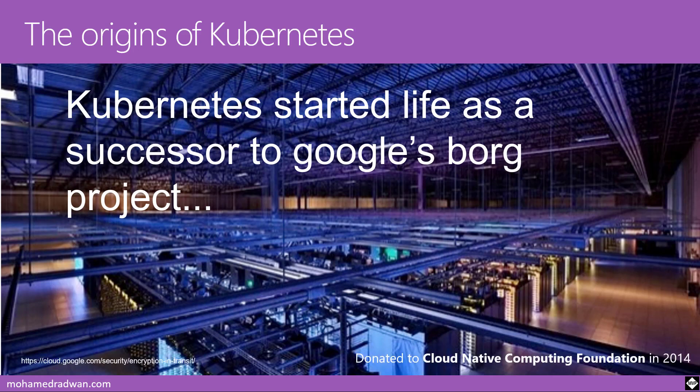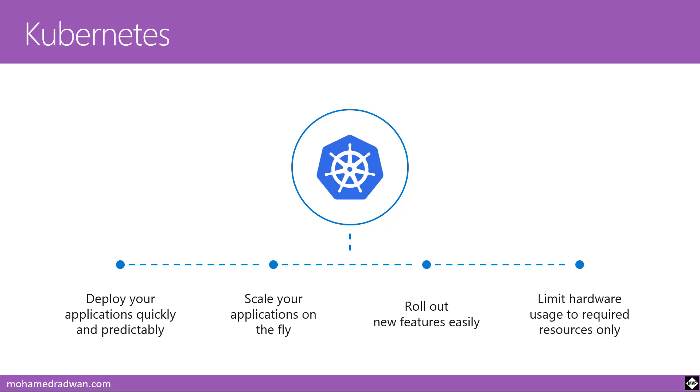The origins of Kubernetes: it came to life as a successor to Google's Borg project and was donated to the Cloud Native Computing Foundation in 2014. Google has been running containerized workloads in production for more than a decade. Everything running inside Google runs in a container, and the system that managed those containers was called Borg. Many developers at Google who worked on Kubernetes were formerly developers on the Borg project. Google incorporated the best ideas from Borg into Kubernetes and addressed pain points identified with Borg over the years.